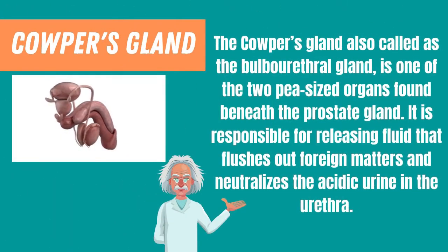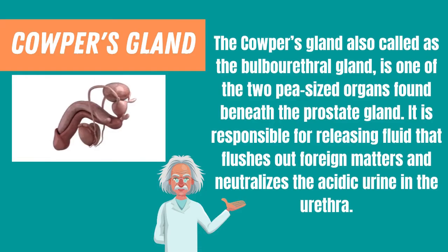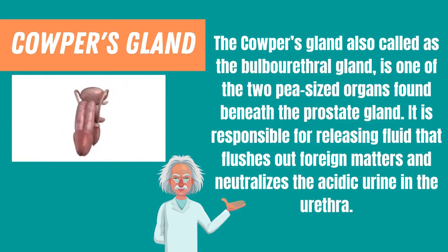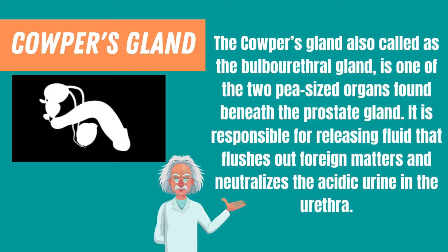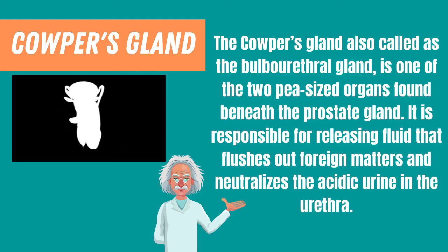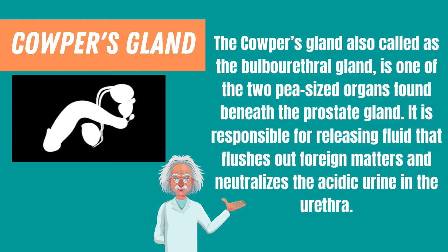Cowper's gland, also called the bulbourethral gland, is one of the two pea-sized organs found beneath the prostate gland. It is responsible for releasing fluid that flushes out foreign matter and neutralizes the acidic urine in the urethra.